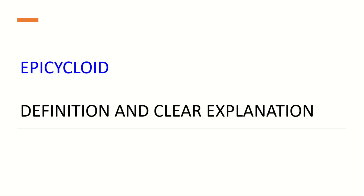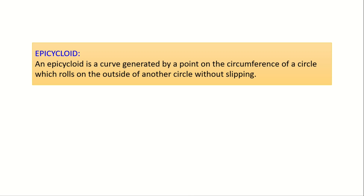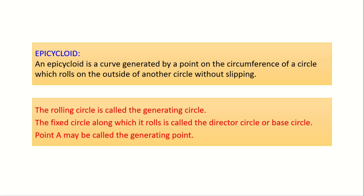Let us now understand the definition of epicycloid. An epicycloid is a curve generated by a point on the circumference of a circle which rolls on the outside of another circle without slipping. The rolling circle is called the generating circle. The fixed circle along which it rolls is called the director circle or base circle. And the point A may be called the generating point.